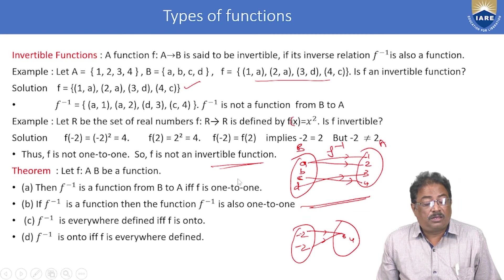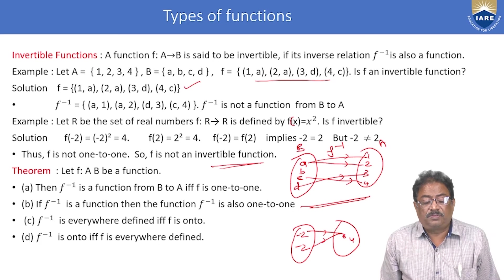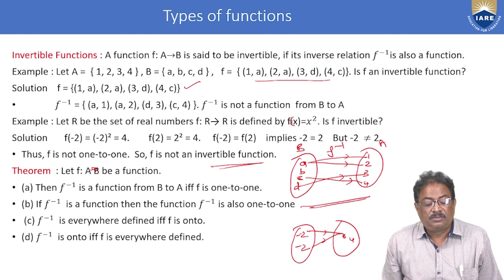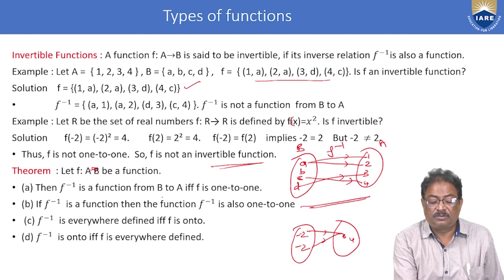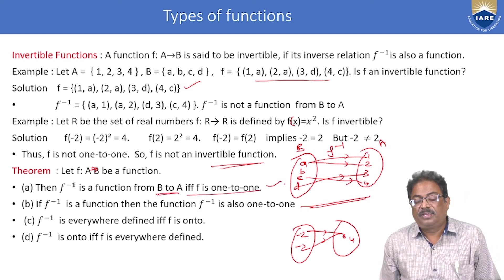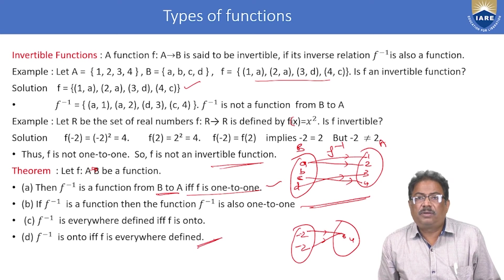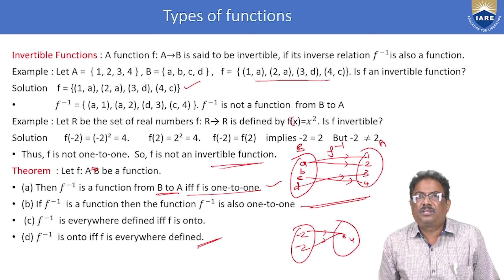Theorem: If f is a function from A to B, then f⁻¹ is a function from B to A provided f is one-to-one. We will discuss all these theorems in later classes, after covering the composition of functions.